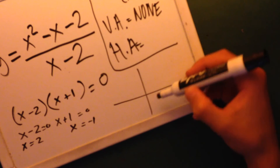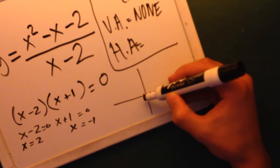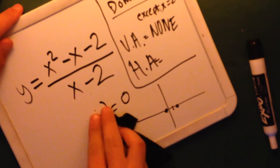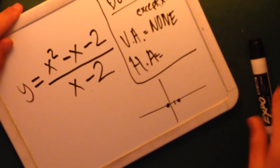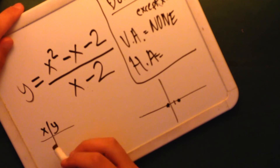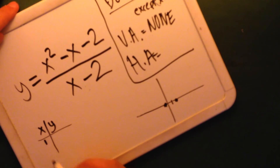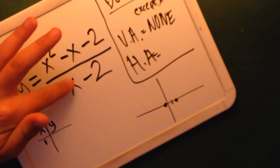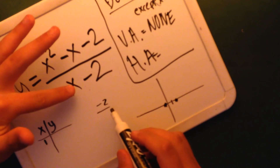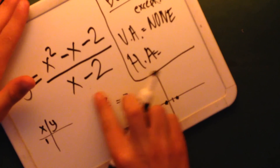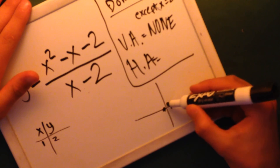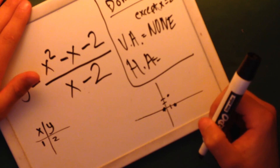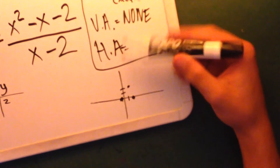Those are our two intercepts. Now we can make a table of x and y values. If x is 1, then y is: 1 squared minus 1 minus 2 on top is negative 2, over 1 minus 2 which is negative 1, giving y equals 2. So if x is 1, y equals 2. We don't have a vertical asymptote and we don't have a horizontal asymptote — that's the basic notion of finding the domain, asymptotes, and graphing this function.